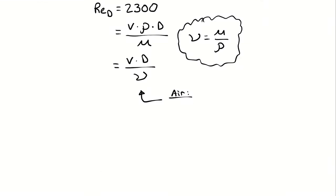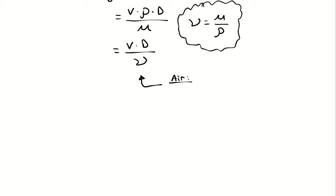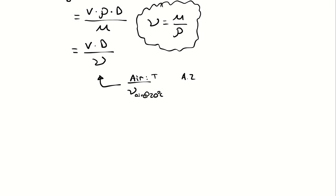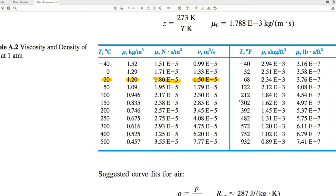So in our equation, we're going to use a kinematic viscosity for air at 20 degrees Celsius. And that number is 1.5 times 10 to the negative 5th meters squared per second.